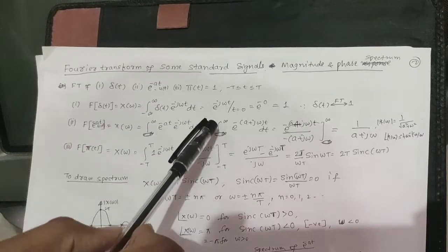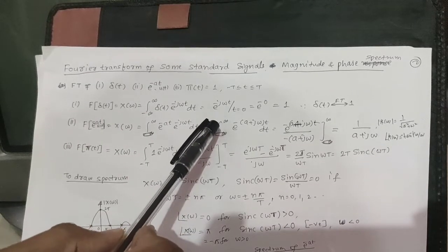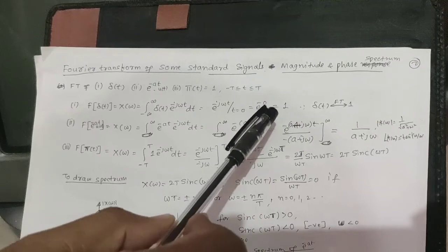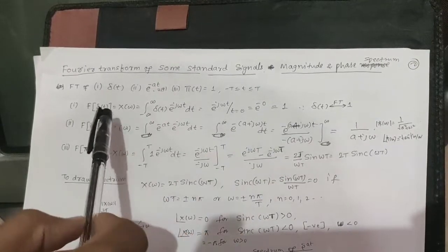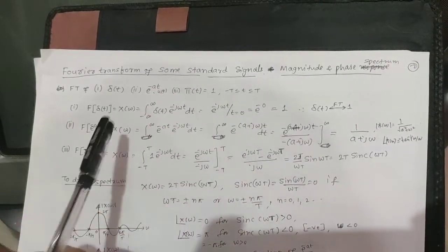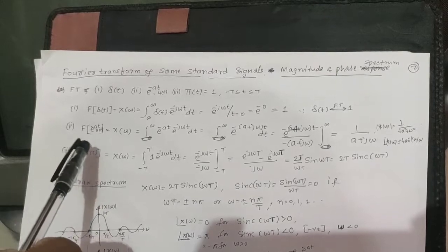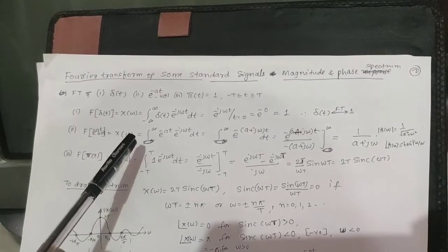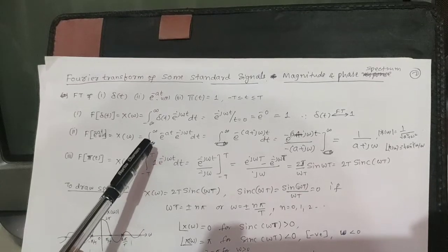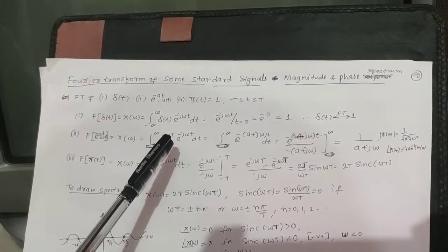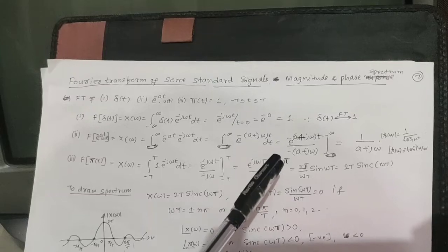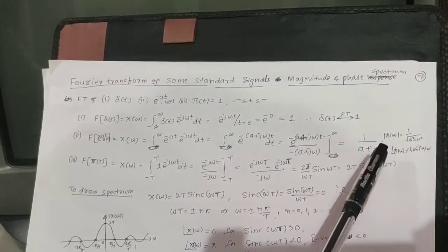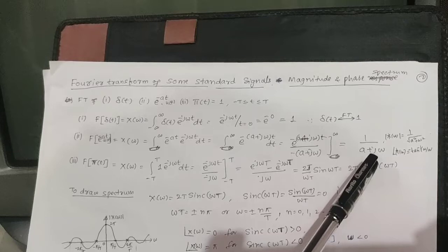Therefore, integration is not required. You will get e^(−jωt) evaluated at t = 0, which equals 1. For the exponential signal, X(ω) = ∫ from 0 to +∞ e^(−jωt) dt. After integration and substituting the limit, you will get X(ω) = 1 / (a + jω).